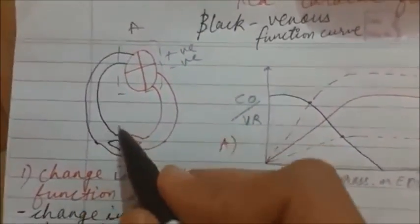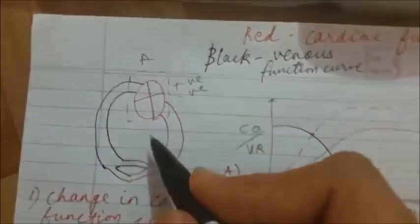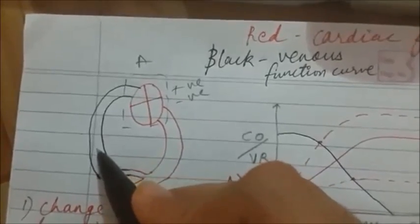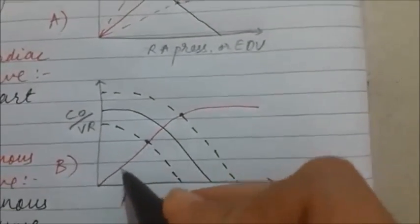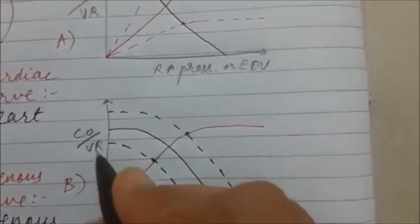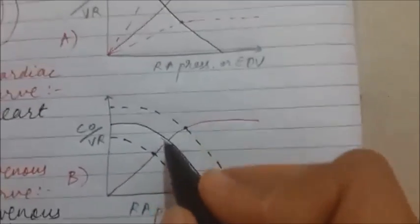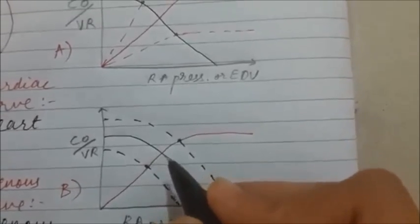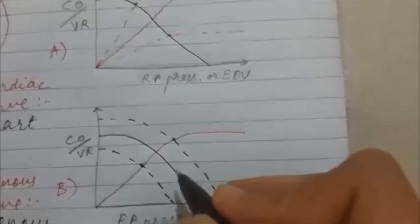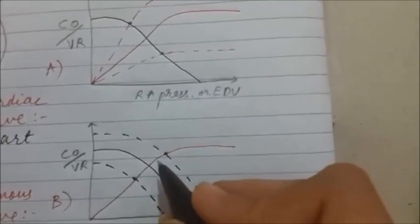Whenever there is a change in the function of the veins — such as an increase or decrease in venous tone, or an increase or decrease in blood volume — it will always cause a change in the venous curve. The cardiac function curve is not changed at all. In an exam, if you get a change in the vascular function curve but no change in the cardiac function curve, it means there is either an increase or decrease in venous tone or blood volume.